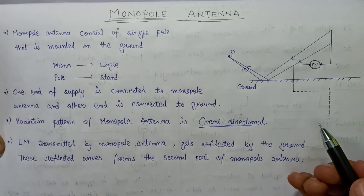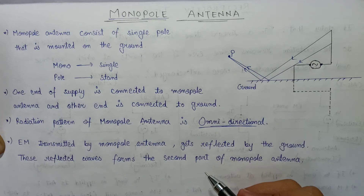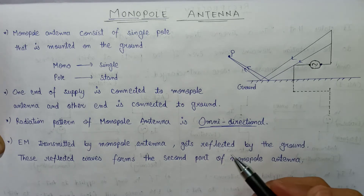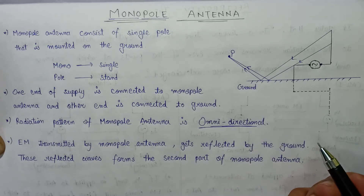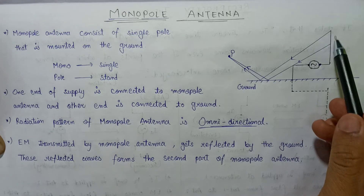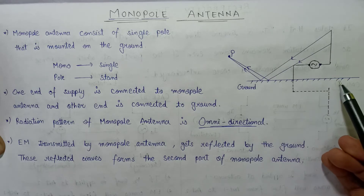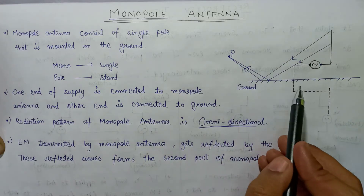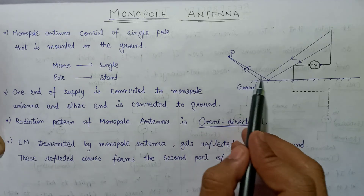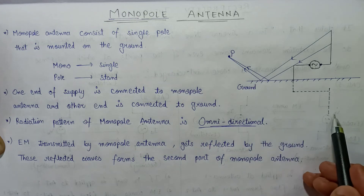If we talk about the length of the monopole antenna, there are two types of length: physical length and virtual length. The length of the monopole antenna above the ground is the physical length, while the length below the ground is the virtual length, because it is generated by the reflection of the waves at point P.